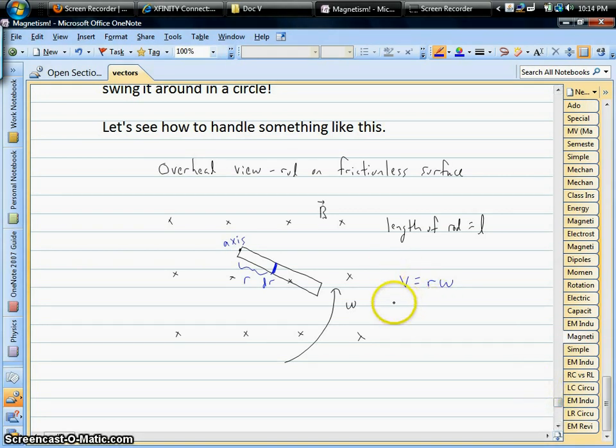So in other words, for that little chunk right there, where its speed at that moment is the little r omega, it's producing a little bit of voltage over that little bit of length of the rod. So that little bit of EMF, I guess we could write it as magnetic field times length. Well, the length of that little chunk is just dr. And it's moving with a certain velocity, r omega.